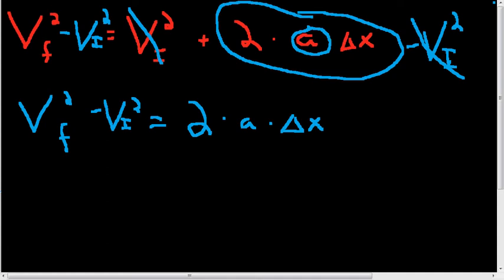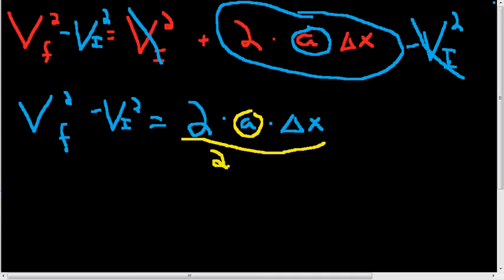Continuing on, switching colors so it's easy to see, we still have to get the A by itself. It's being multiplied by two things. To get rid of them so A is by itself, we have to divide them away, and we can do this in one step. We divide by the 2 as well as divide by the delta x. You'll see these will cancel. Whatever we do to one side, we have to do to the other.